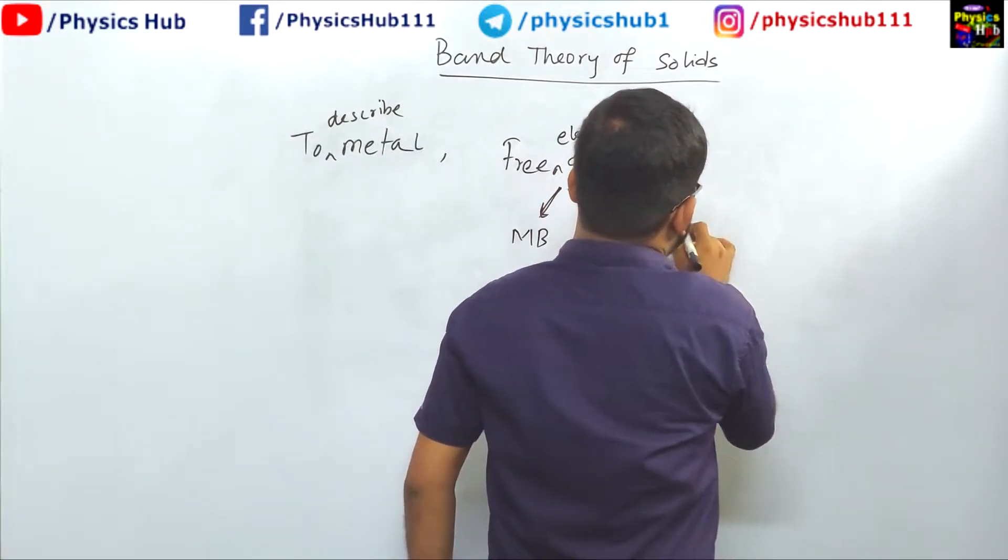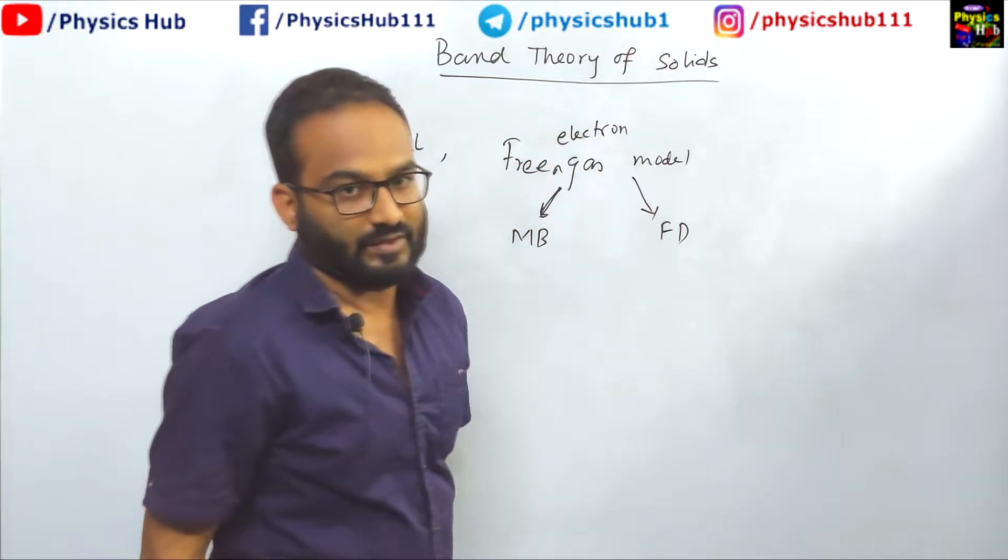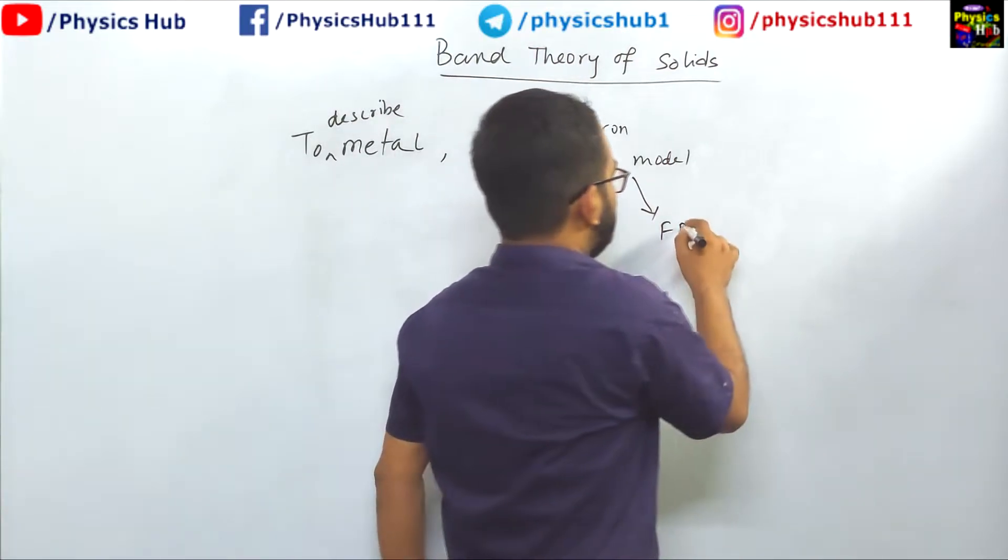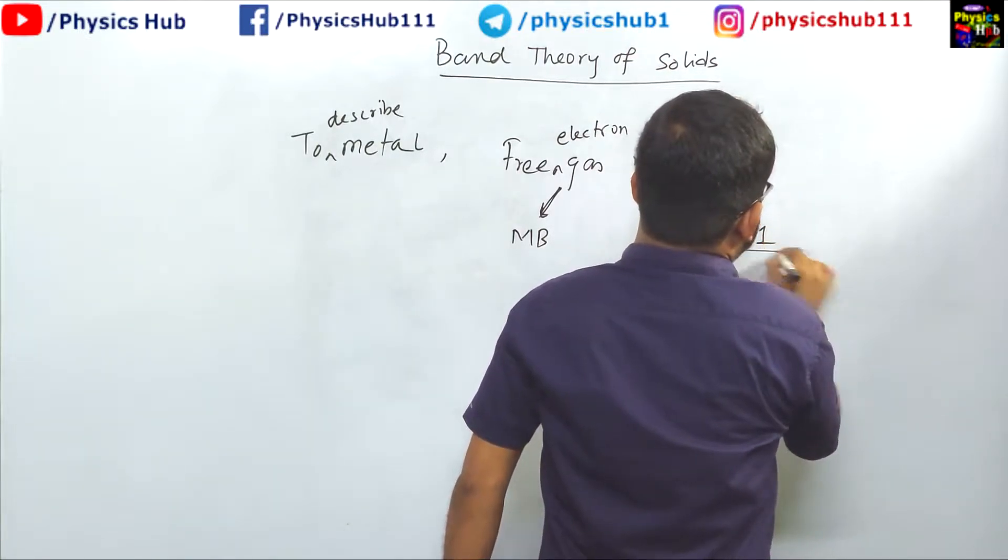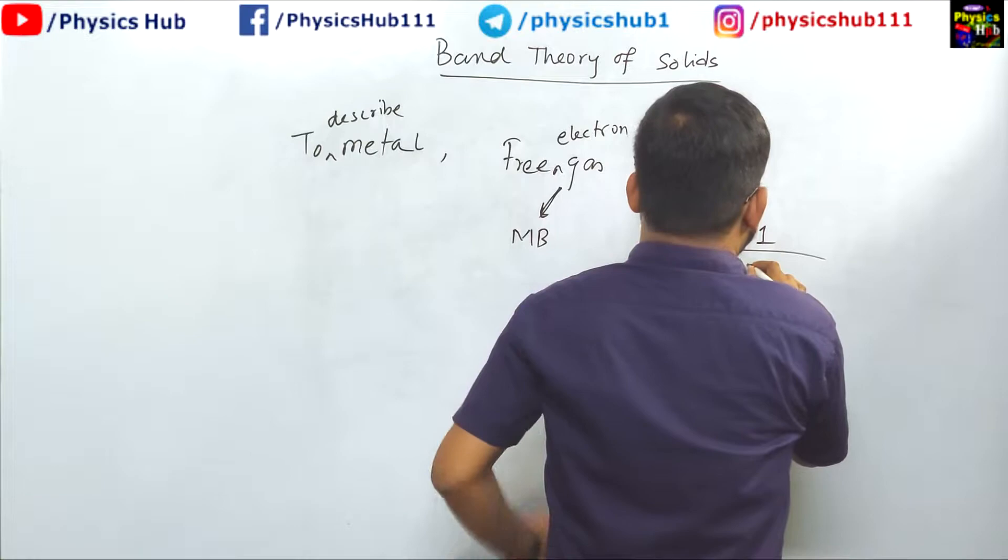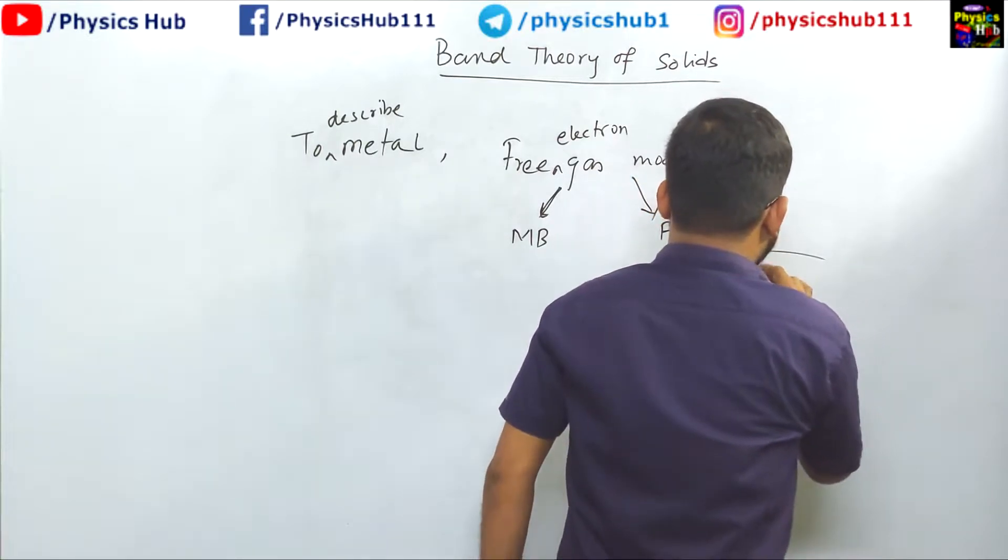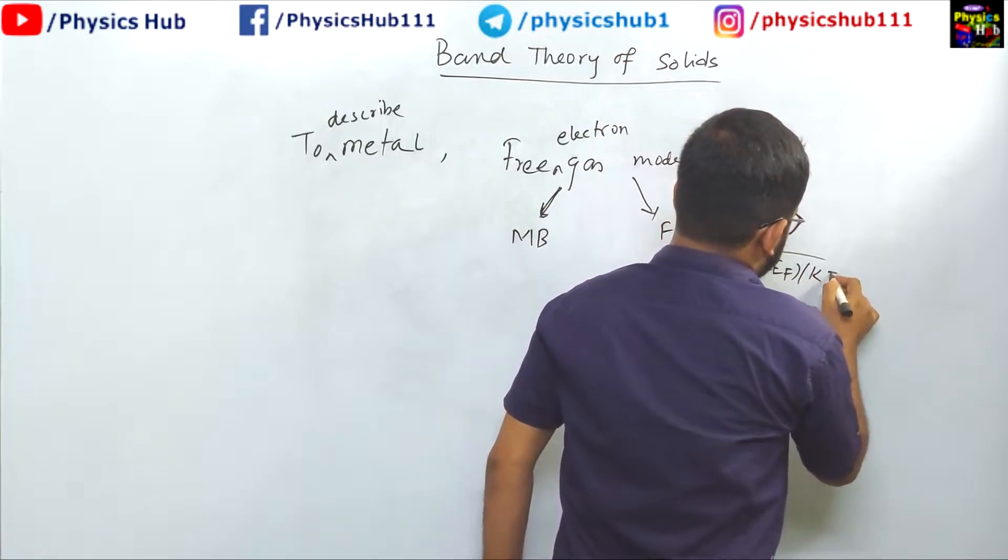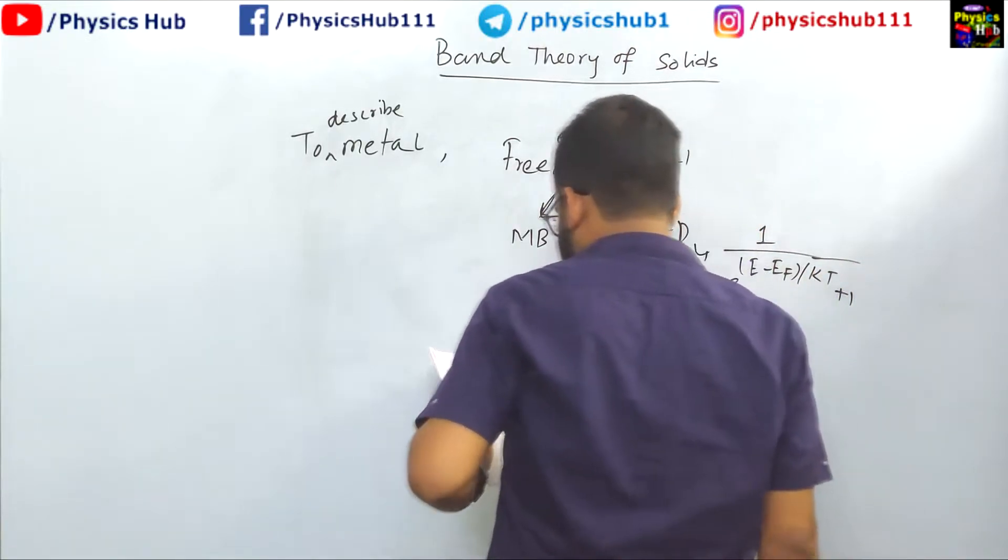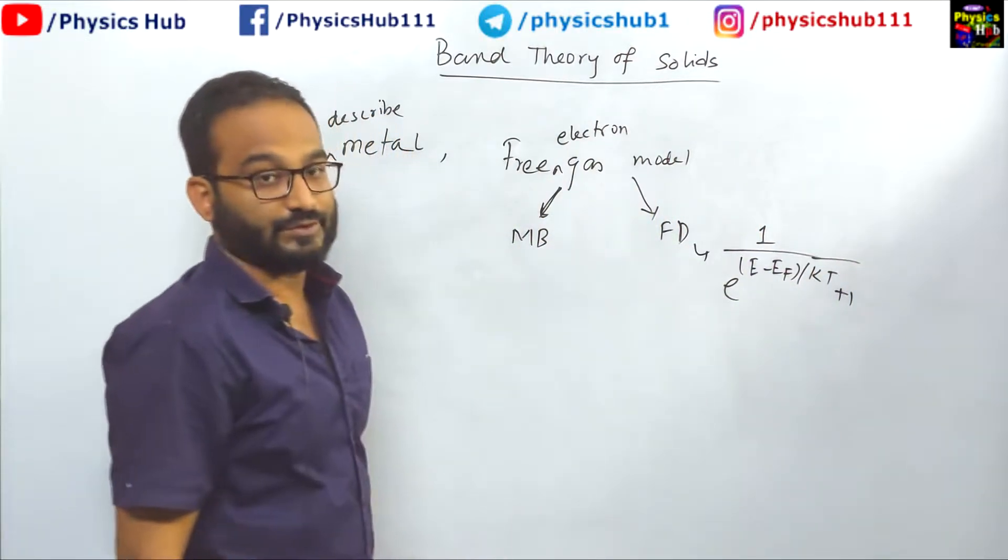We tried to explain it using Fermi-Dirac theory, where the distribution function had a form like 1/(e^((E-E_F)/kT) + 1). This was the form of the Fermi-Dirac distribution function.